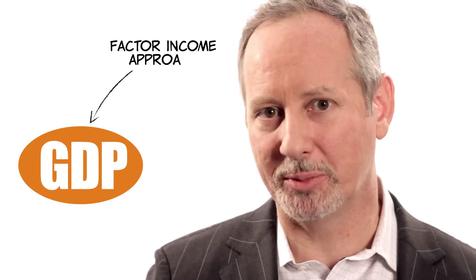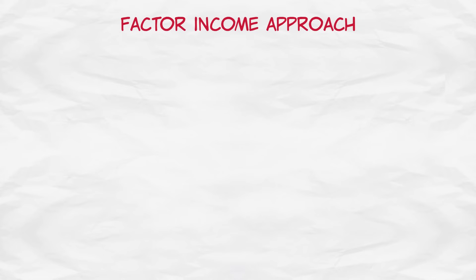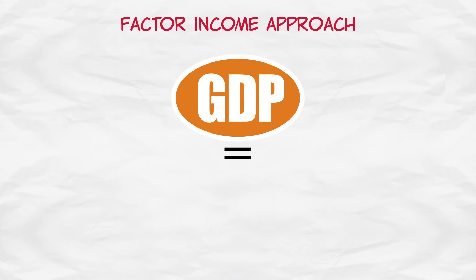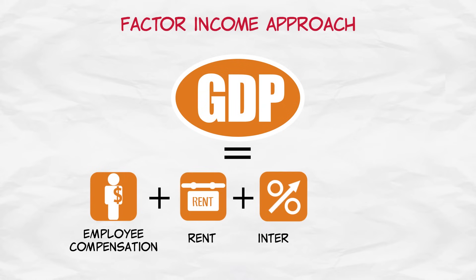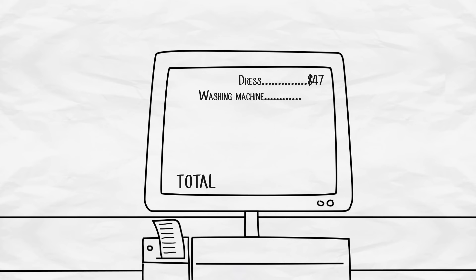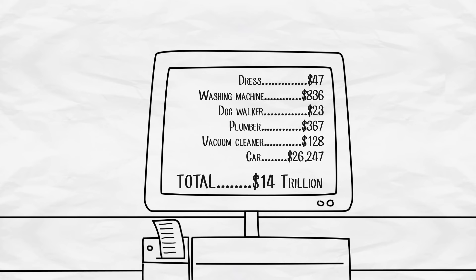The second way of measuring GDP is called the factor income approach, and it measures GDP by adding up employee compensation, rent, interest, and profit. Now, this may seem a little odd. Didn't we define GDP as the market value of goods and services? How can we measure it by looking at incomes?